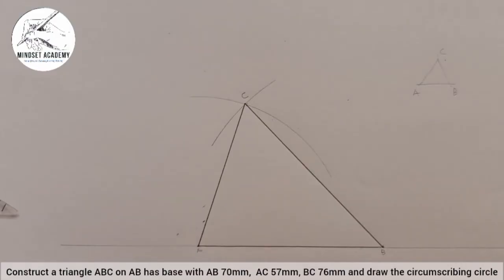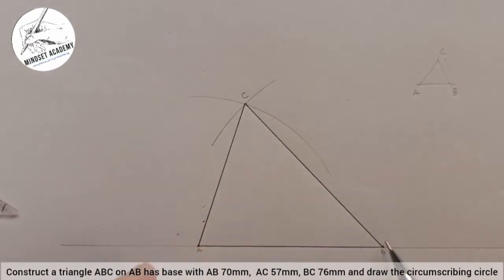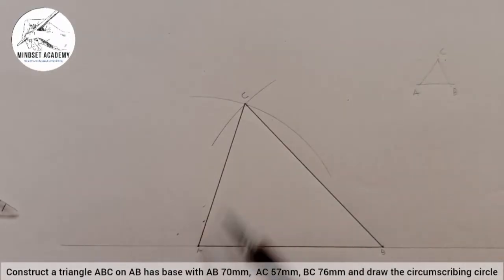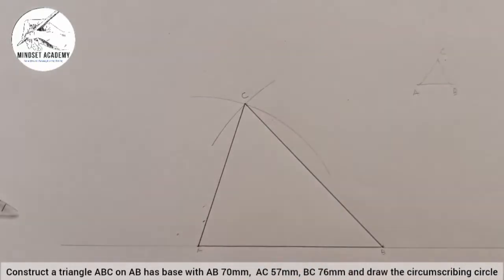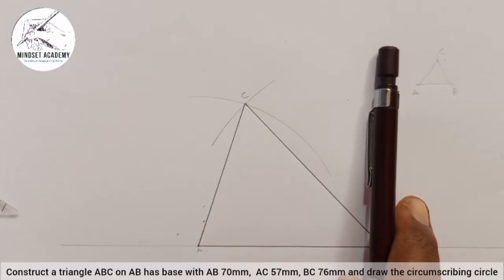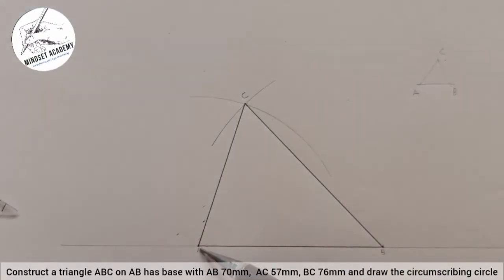Now the difference between inscribing and circumscribing is that in inscribing we are bisecting two angles. We have three sides here: AB is a side, AC is a side, and BC is a side. So any two sides of the triangle we are going to bisect them. If you don't know how to bisect, you can click on this link to learn how to bisect a line.